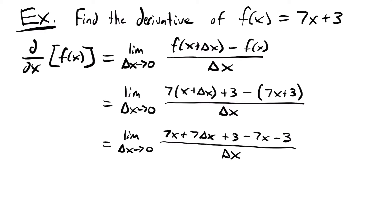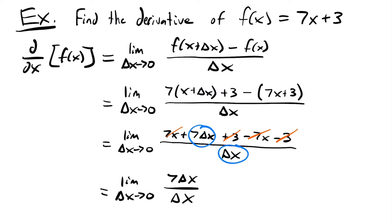Now I see some terms that cancel out. We have a positive 7x and a negative 7x that become 0, and a positive 3 and negative 3 that become 0. So we're left with the limit as delta x approaches 0 of 7 delta x divided by delta x. We cancel the common factor of delta x, leaving the limit as delta x approaches 0 of 7. The limit of a constant is that constant, so this equals 7.